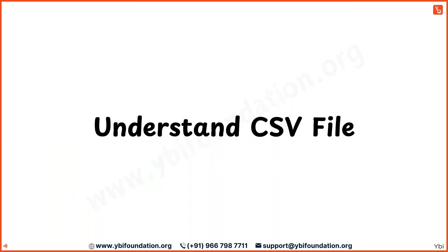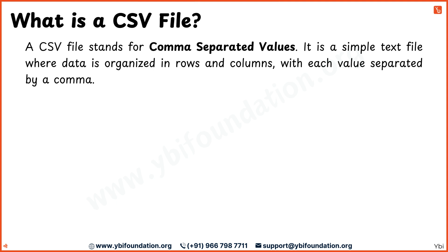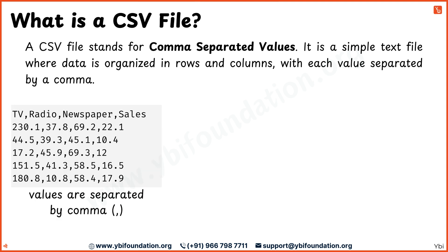Let's understand about CSV files. A comma-separated values or CSV file is a text file used to store data in a tabular format like a spreadsheet. Each line in the CSV file represents a row, and within that row the values are separated by commas, acting like boundaries between different columns.